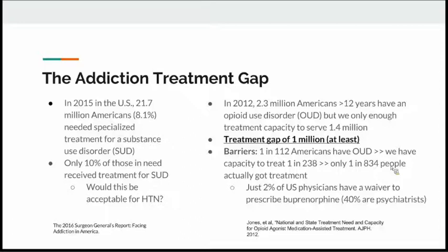There is a significant addiction treatment gap in the U.S. The 2016 Surgeon General's Report reported that in 2015, 21.7 million Americans—about 8%—needed specialized treatment for a substance use disorder, and only 10% of those who needed treatment actually received it. Data from the American Journal of Public Health showed that 2.3 million Americans over age 12 have an opioid use disorder, but we only have treatment capacity to serve about 1.4 million—a gap of at least 1 million.